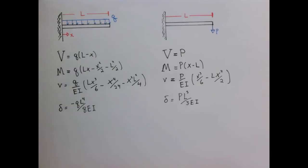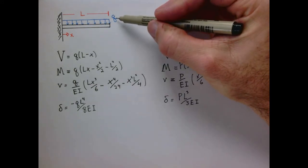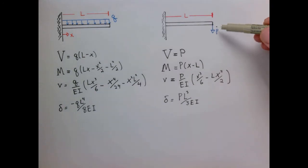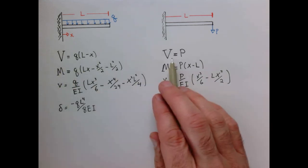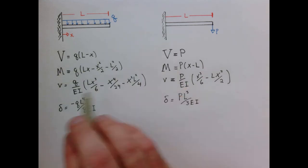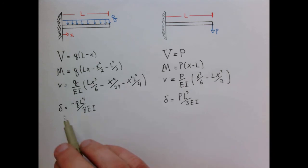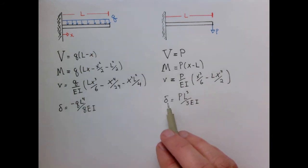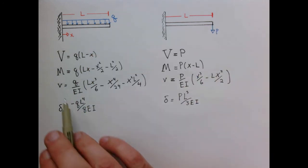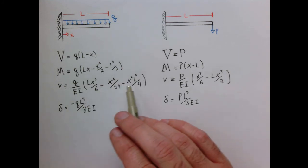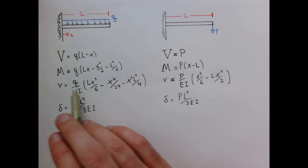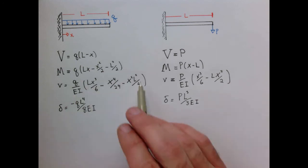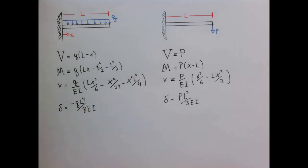Let's summarize our results for the cantilever beam under its own weight with distributed load Q, and under a point load P at the end of beam of length L. Here are our shear, moment, and deflection functions. Delta is the deflection at the very end of the beam in both cases. Our deflection formula along the length is sometimes convenient to write slightly differently, factoring out powers of L so the functional form is bounded between zero and one.